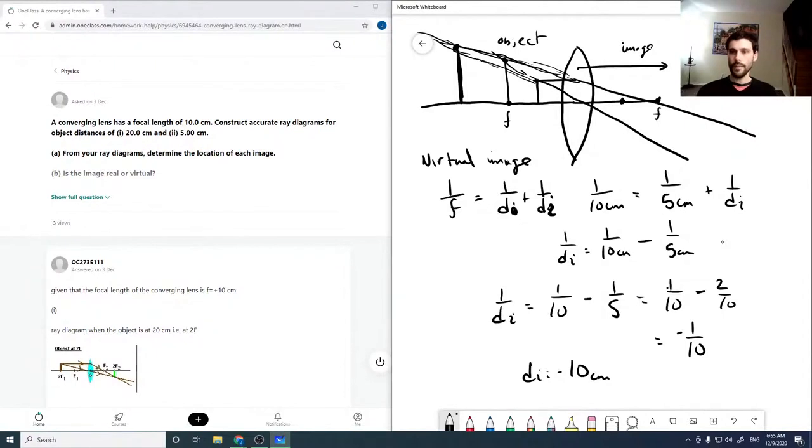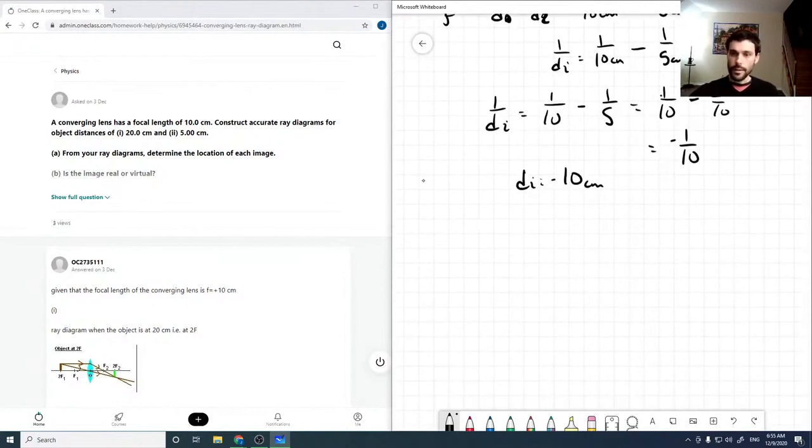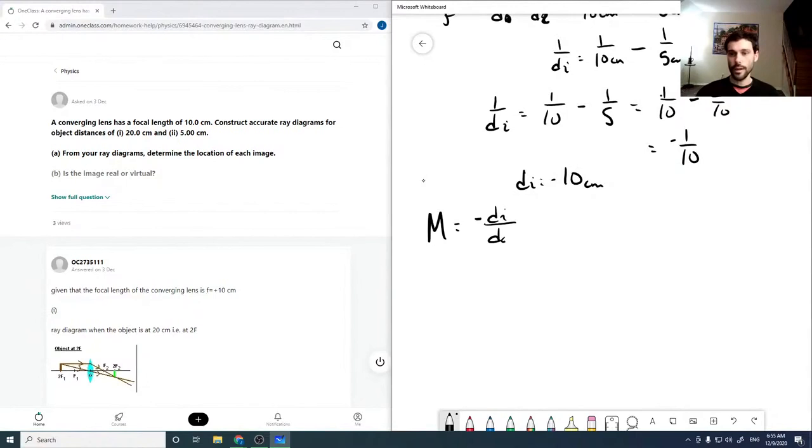So it's behind the lens and at the focal point, in fact. So I must have been trying to push it. So I guess it should be there. So now if we do our magnification, minus DI over D naught minus minus 10 over 5, which is equal to 2.